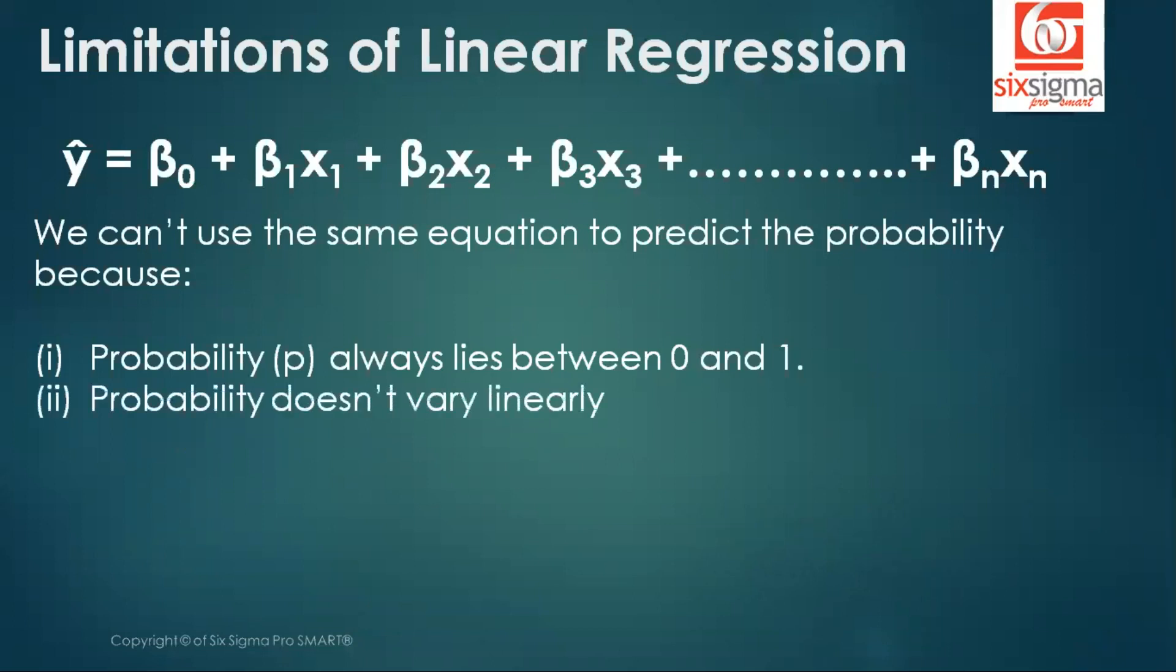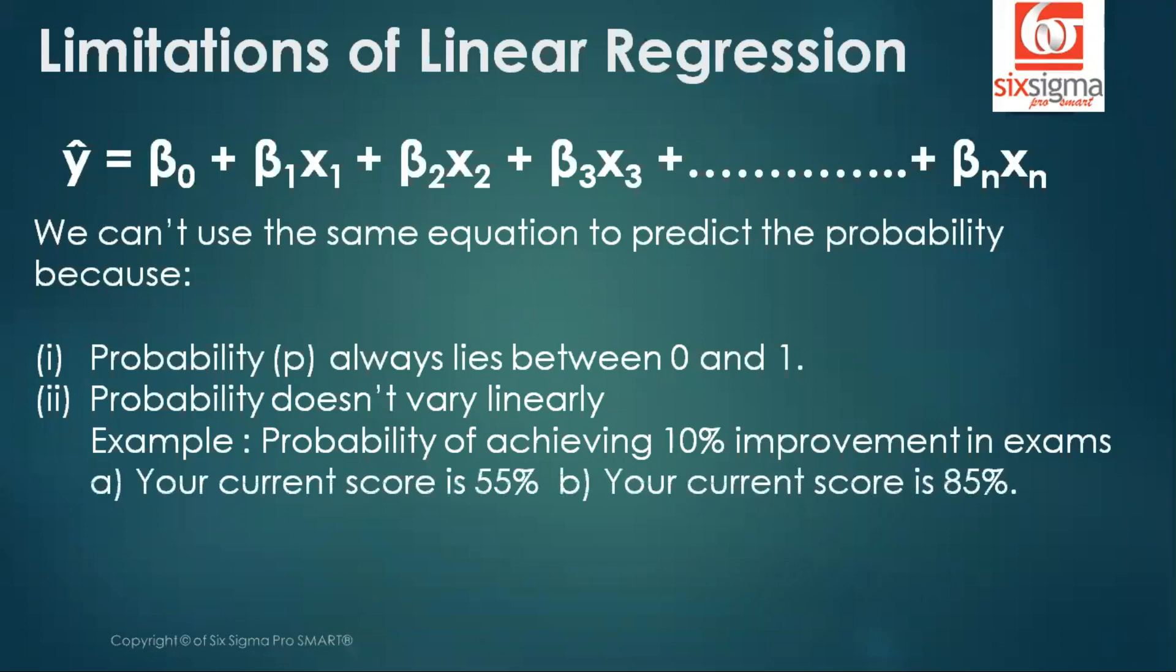Secondly, the probability doesn't vary linearly. What does it mean? Let's take an example. The probability of achieving 10% improvement in exams. So when we talk about improvement, I'm sure there must be a baseline in mind. Let's say the first scenario is that your current score is 55%. And the second scenario is that your current score is 85%. Now you realize if you're talking about the same exam, a person sitting at a 55% score has a larger room for improvement. But a student B who's already doing excellent in the exams, sitting at an 85%, for him to do another 10% would require a lot more effort, and the probability would always be less compared to the case A. So the probabilities don't vary linearly. Take some time to absorb this concept.